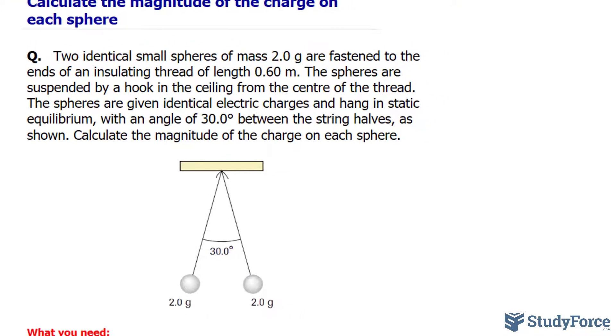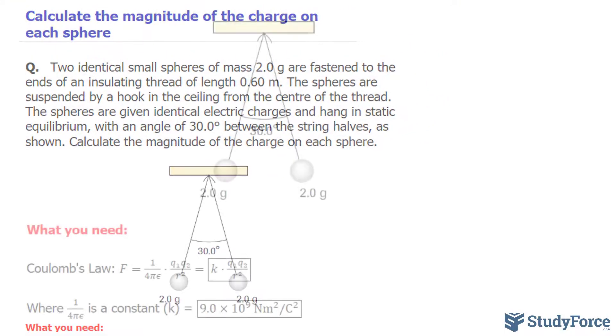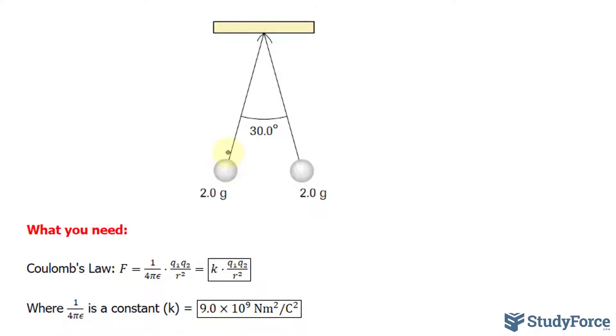Before we start answering this question, take a good look at what is happening. We have two spheres whose mass is known, and they're both identical. Between the two spheres that are hung by these two strings is a 30 degree angle. What we're looking to do is find out the charge of these two spheres, and to do that we'll be using Coulomb's law.